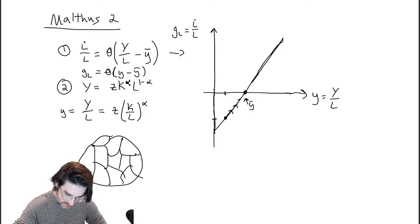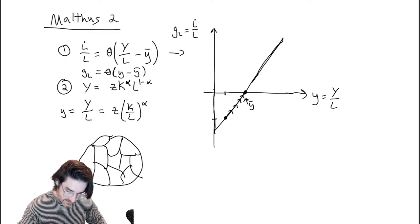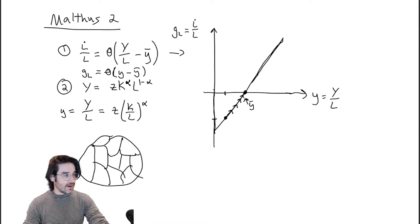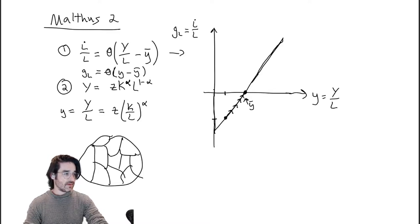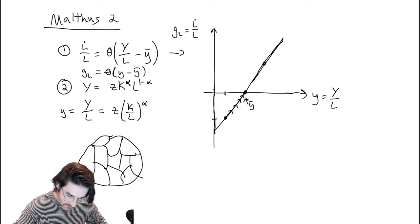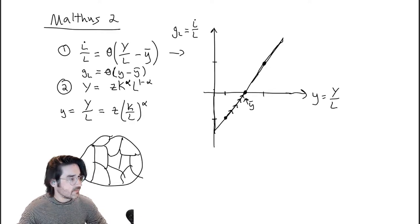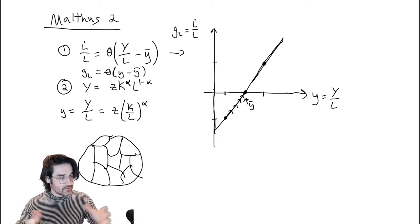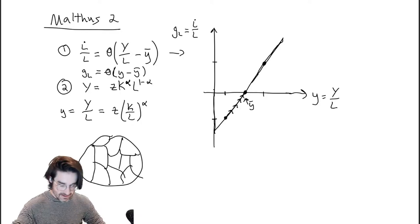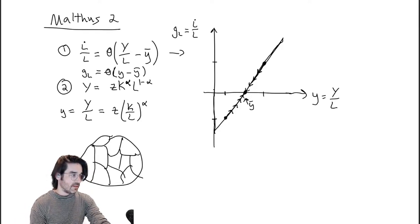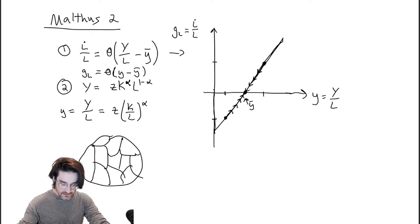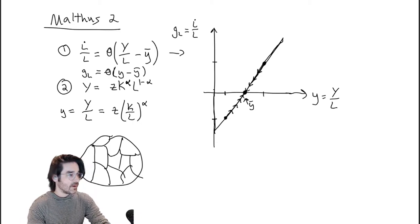So you're going to move along, and that's going to be true any time you're below the x-axis. You'll eventually hit y-bar, where the growth rate of L is zero and you don't move — you just stay there. On the other side, if you start at a high Y-zero, that implies a positive population growth rate, population goes up, things get more crowded, plot size goes down, output per person goes down, and you move down and left — eventually converging to y-bar.